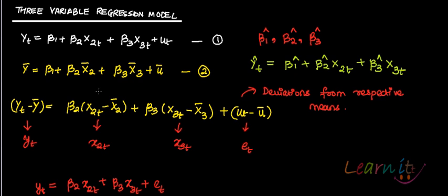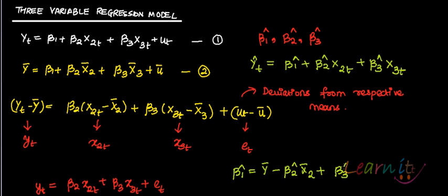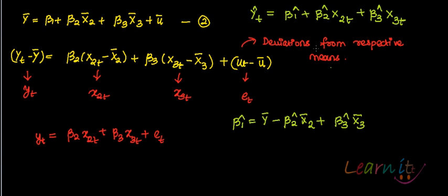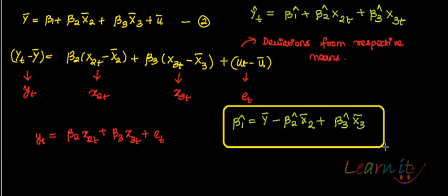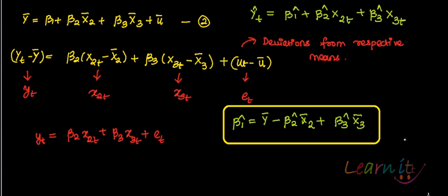Also remember that you can estimate beta 1 hat by taking the means of all terms. So you can estimate beta 1 hat as: y bar minus beta 2 hat x bar 2 minus beta 3 hat x bar 3. So this becomes an estimate for beta 1 hat.